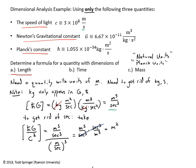Now I want a quantity with just units of meters, so I need to take the square root. The square root of ℏG/c³ has units of meters, which is what I want. So this thing is the answer for part A.